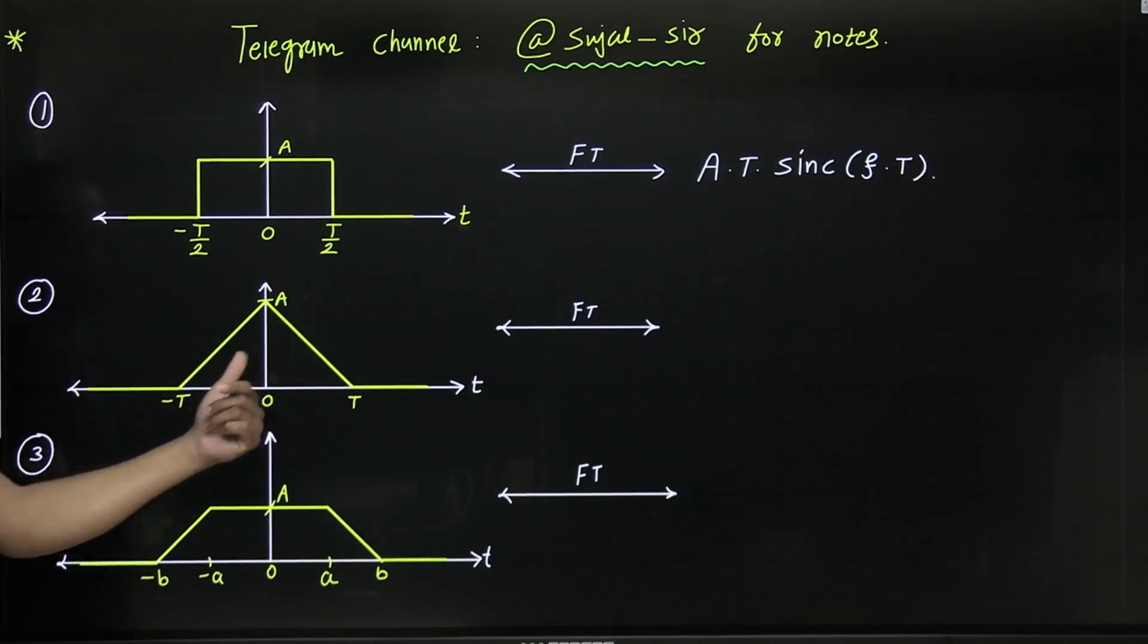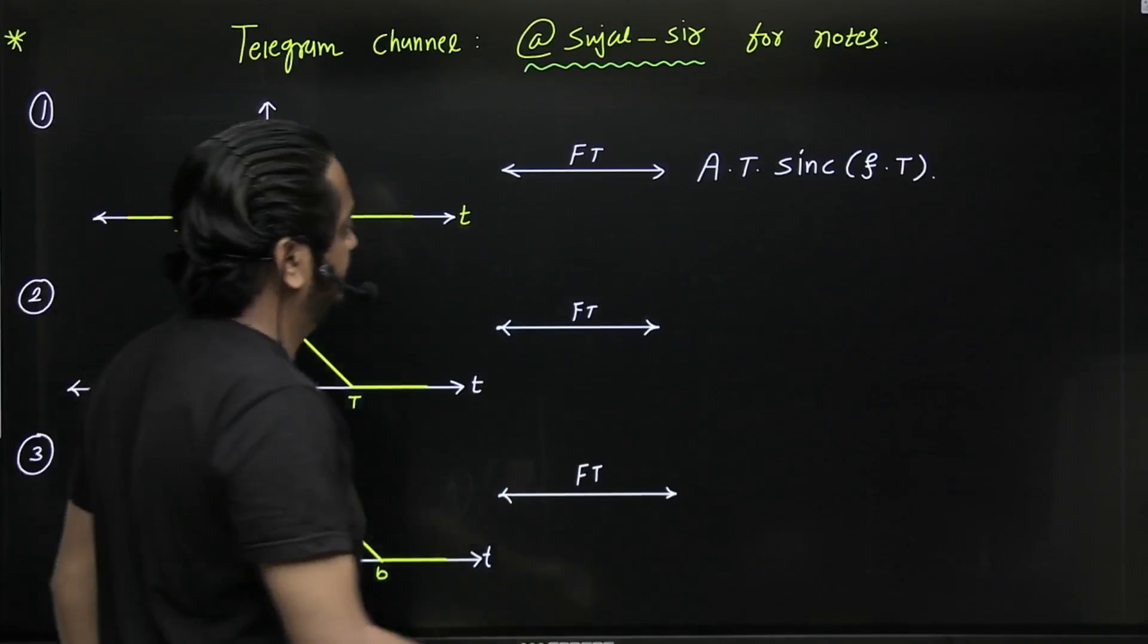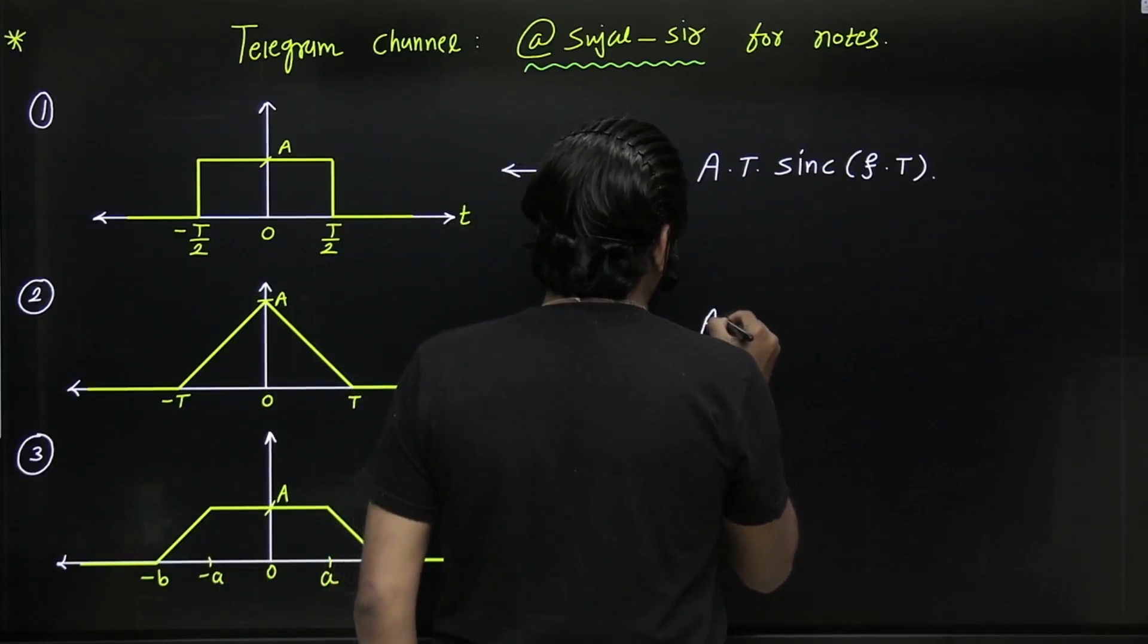Similarly, if it is a triangle function from minus t to plus t with amplitude a, then its Fourier transform is given by a times t times sinc squared of ft.